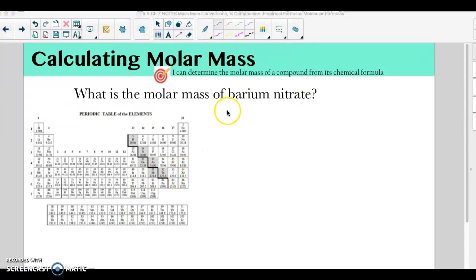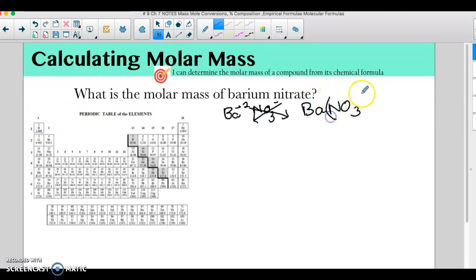So barium nitrate, we would want to look at the fact that barium is plus 2, nitrate minus 1. So if I do the crisscross, my formula is going to be Ba(NO3)2.